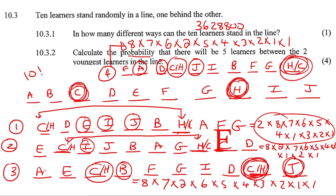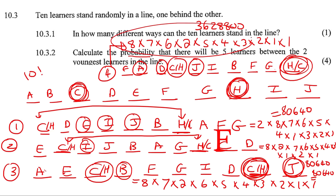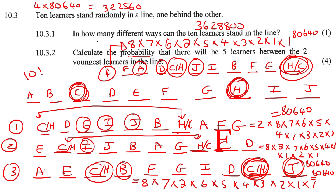Working out each of those scenarios, you get 80,640 for every single one of them. So 4 multiplied by 80,640 gives us 322,560 different ways. But the question asked for probability, so probability is always going to be 322,560 divided by the total number of ways the learners could stand, which is 3,628,800 from the first question — and that gives us 4 out of 45.